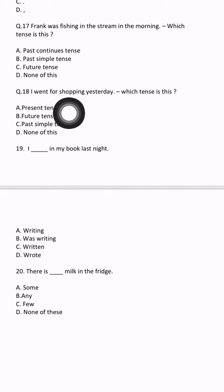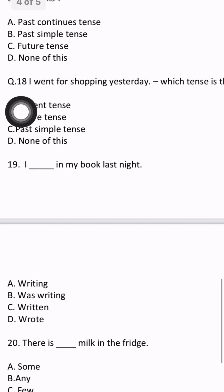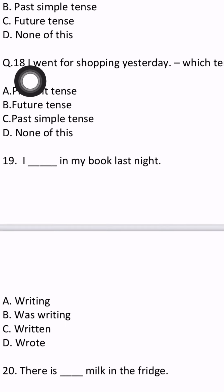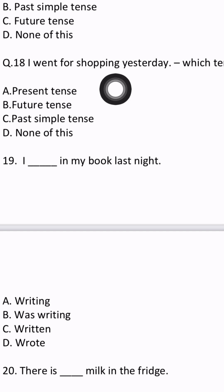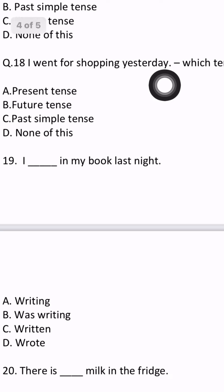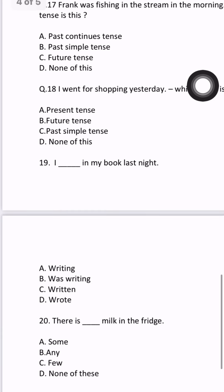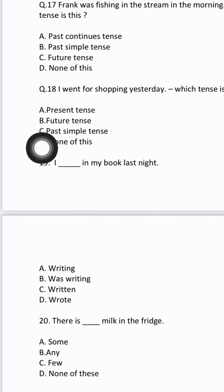Question number 18: 'I went for shopping yesterday.' Which tense is this? Let's look at the verb — went. Go, went — that is past tense. Also, 'yesterday' shows that it is past tense. So the answer will be past simple tense. Answer will be C.